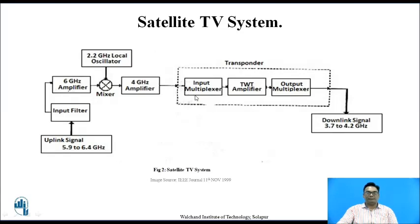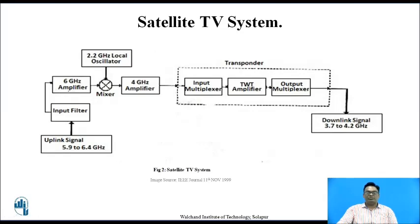The transponder generally consists of three major blocks: first, an input multiplexer; second, a TWT amplifier; and third, an output multiplexer. The input multiplexer multiplexes all the incoming signals and gives them to the TWT amplifier, where the traveling wave tube amplifier amplifies the signal in terms of microwave frequencies. It is then given to the output multiplexer, where these signals are given to a single antenna. This antenna then transmits to the Earth station via the downlink signal, which is of 3.7 to 4.2 GHz.